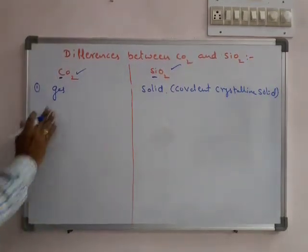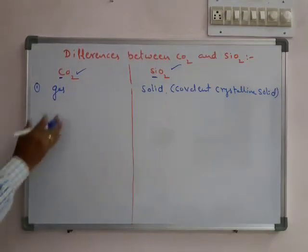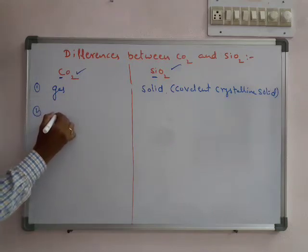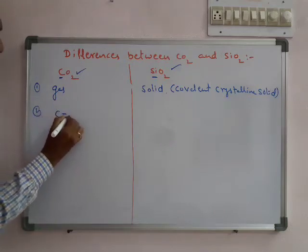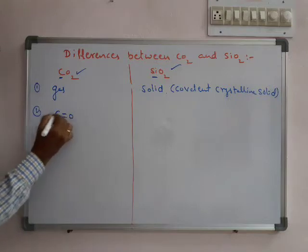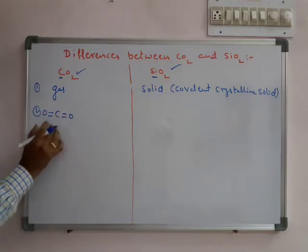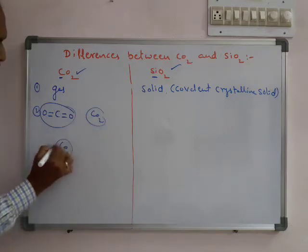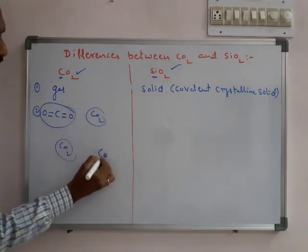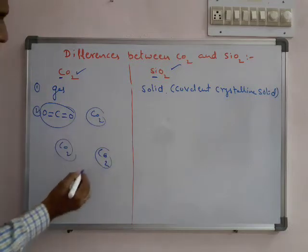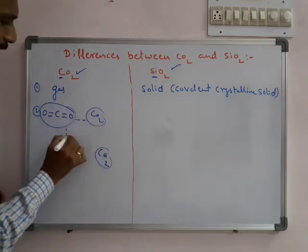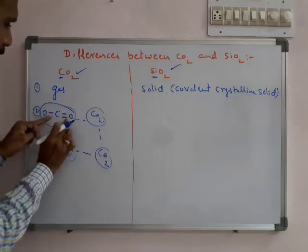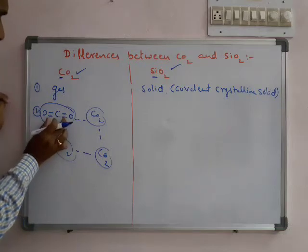Why is it gaseous form? Why is it solid form? In CO2, we know the CO2 structure. Many CO2 molecules are like this with linear structures, but there are weak Van der Waals attractions present between them. The C double bond O double bond O - these bonds are very strong.